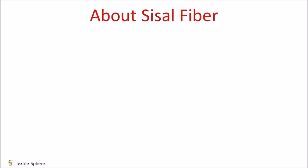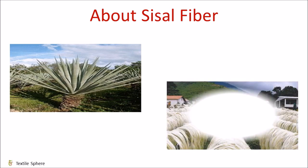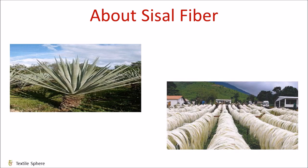Sisal fiber is derived from leaves of a plant. It is usually obtained by machine decortication. The strands are usually creamy white, averaged from 80 to 120 cm in length and 0.2 to 0.4 mm in diameter, and are luxurious in appearance. The world production is about 30 lakh tons, Brazil being the largest producer followed by China, Mexico, Tanzania and Kenya.